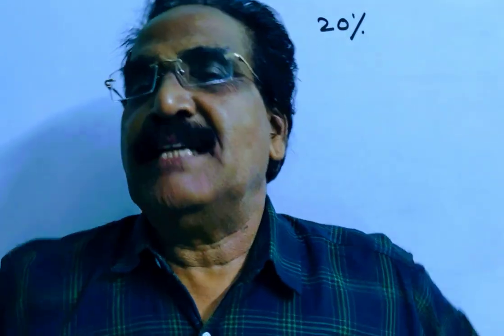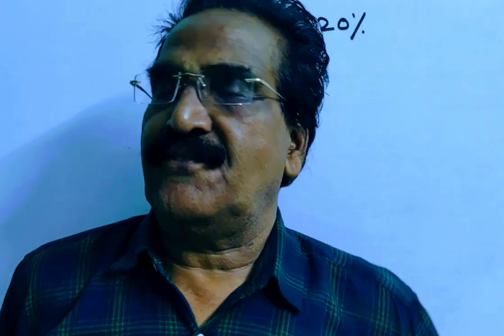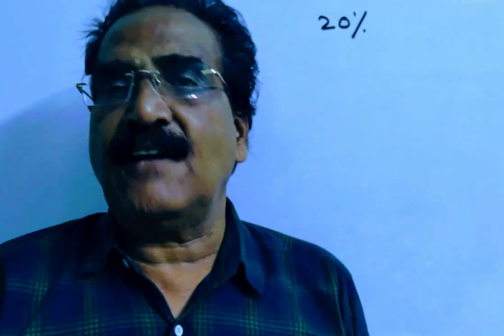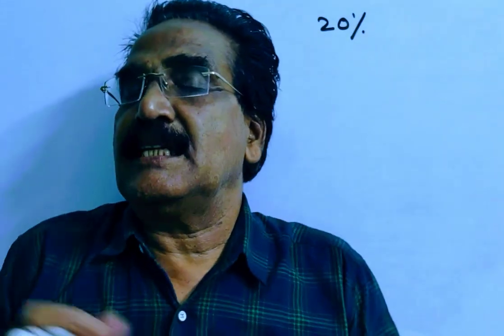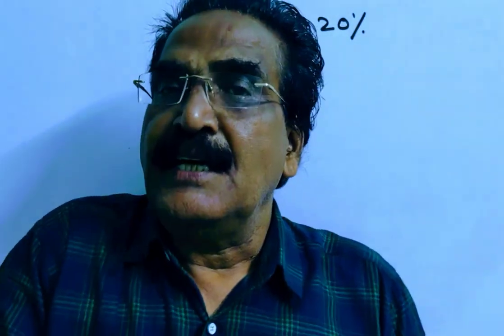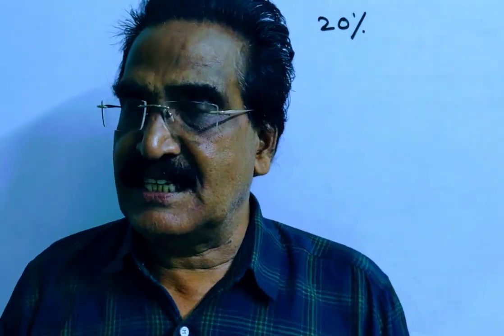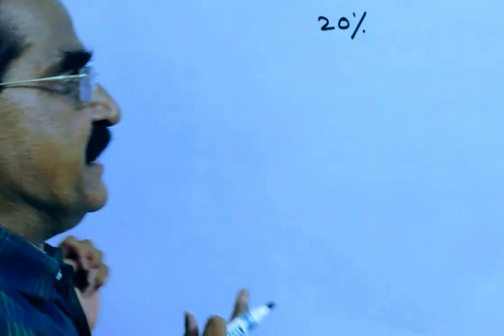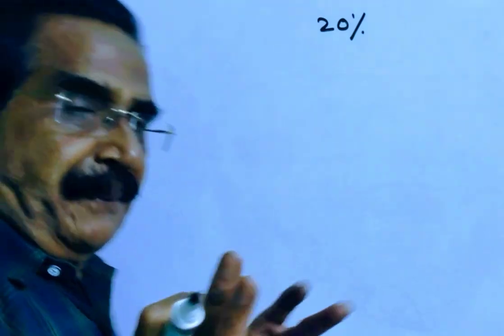Hi friends, good morning. Please look at the next problem in profit and loss. The problem is given in the description box. A reduction of 20% in the price of sugar enables a purchaser to get two and a half kg of sugar more for Rs.160. What is the original price of the sugar?